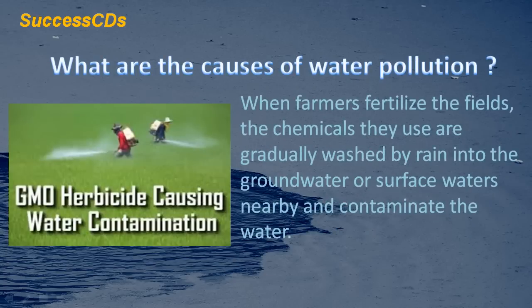When farmers fertilize the fields, the chemicals they use are gradually washed by rain into the groundwater or surface waters nearby and contaminate the water.